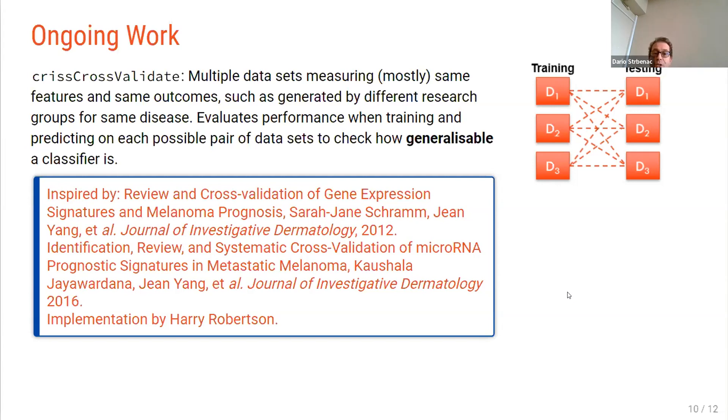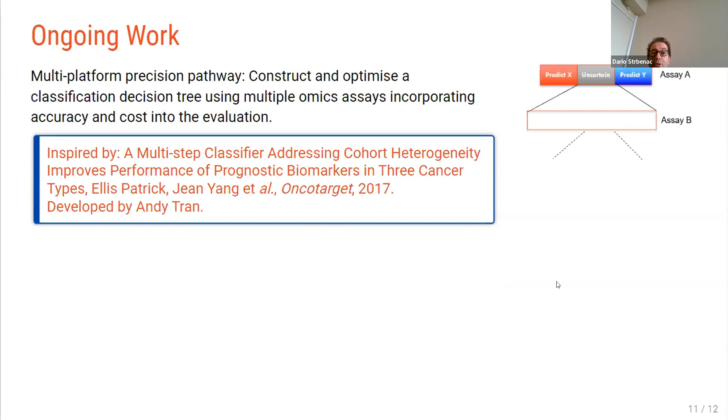So this work is inspired by two journal articles. So first one was led by Sarah Jane Schramm and Jean Yang that was in Journal of Investigative Dermatology in 2012. And the second one is a similar idea that applied to microRNAs, and that was led by, again, Jean Yang and her student at the time, Kaushila Jayawadana, and that was published in Journal of Investigative Dermatology in 2016. And the current implementation is being put together by Harry Robertson. Lastly, there's the multi-platform precision pathway, and the goal is to construct and optimize a classification decision tree that uses multiple omics assays which incorporate accuracy and cost into the evaluation. And this is inspired by the multi-step classifier that addresses cohort heterogeneity, which was led by Ellis Patrick and Jean Yang and published in OncoTarget in 2017. This MPPP is being developed by Andy Tran.